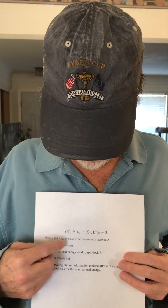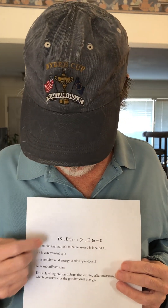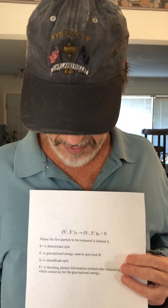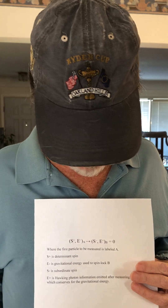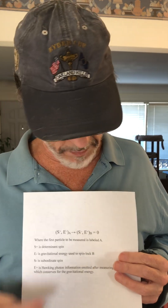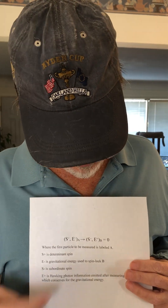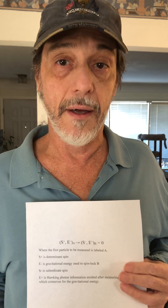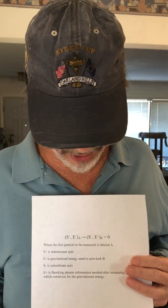What we have here is particles A and B are entangled, and this particular formula — S plus stands for the determinant spin, which is going to set the spin. S minus is the subordinate spin. E minus is the gravitational energy used to spin lock B, and E plus is the Hawking photon that will be emitted to conserve the entire transaction.